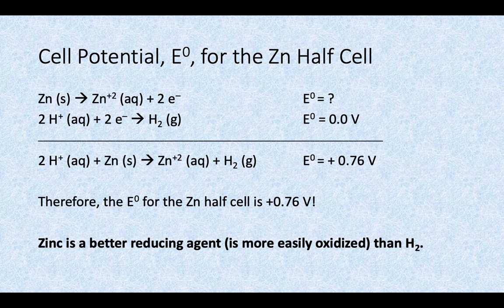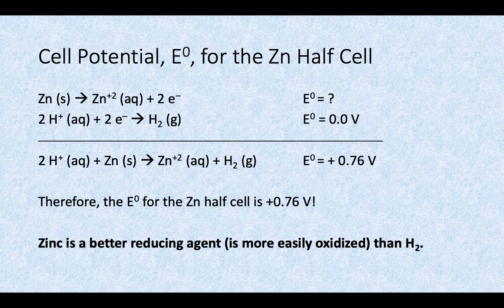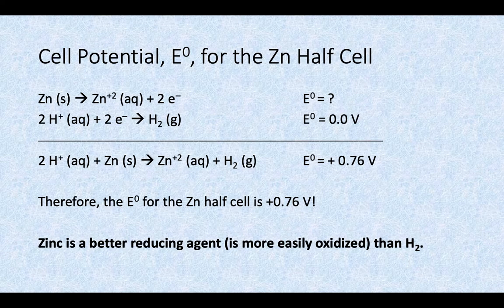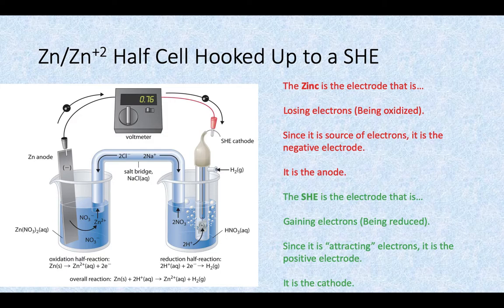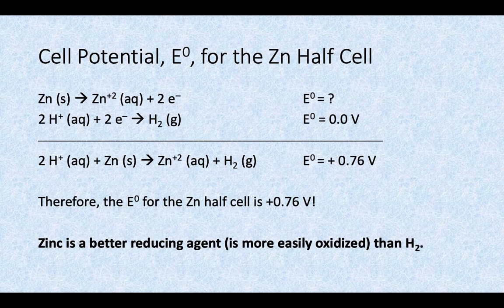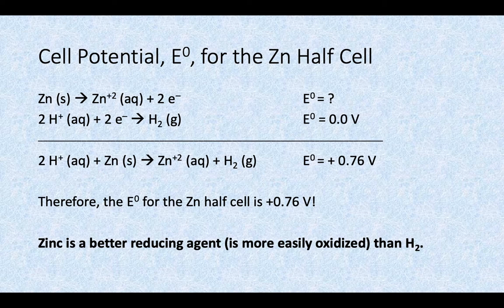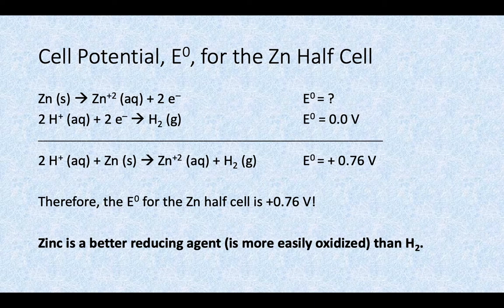When we look at the cell potential there, we can add the half reaction for zinc to that half reaction for the SHE and get an overall net value of 0.76. If you look at the picture on the previous slide, on the voltmeter it has 0.76 volts. So what that means is if we add our two half reactions together, we can get the overall reaction. So we know the overall is 0.76, we know the SHE is 0, so that means that the zinc half cell reaction has a value of 0.76 volts. You can also find that reaction on your standard cell potential list that you have in front of you.